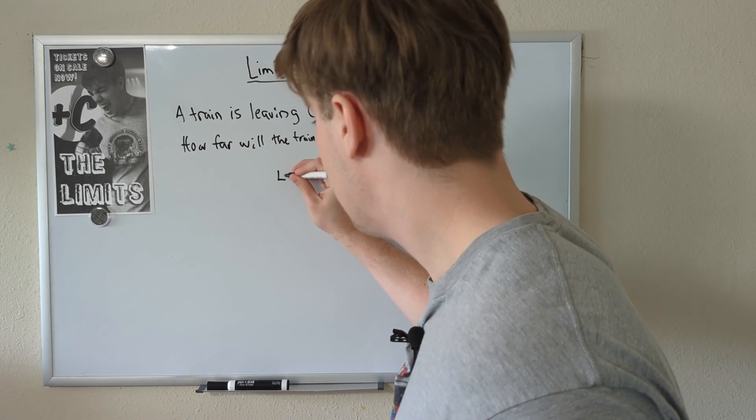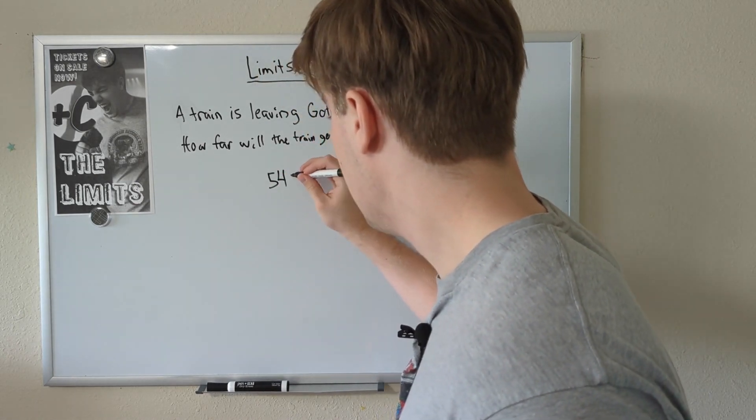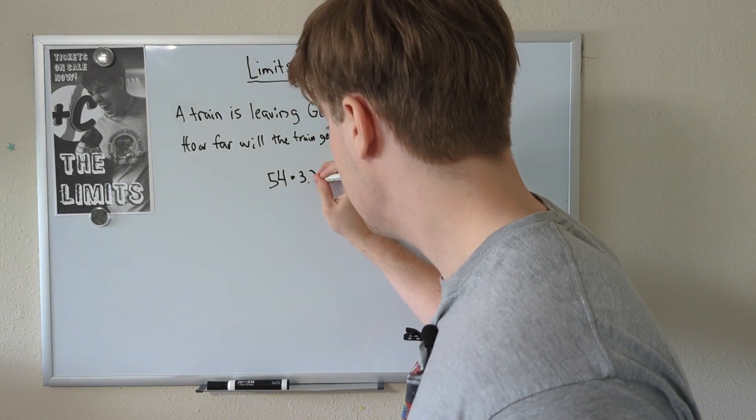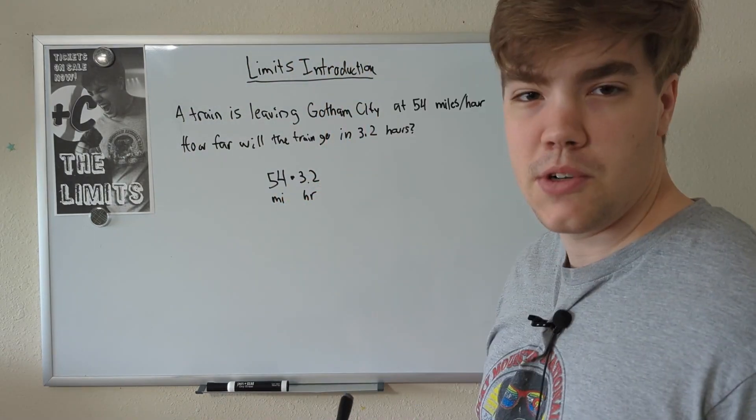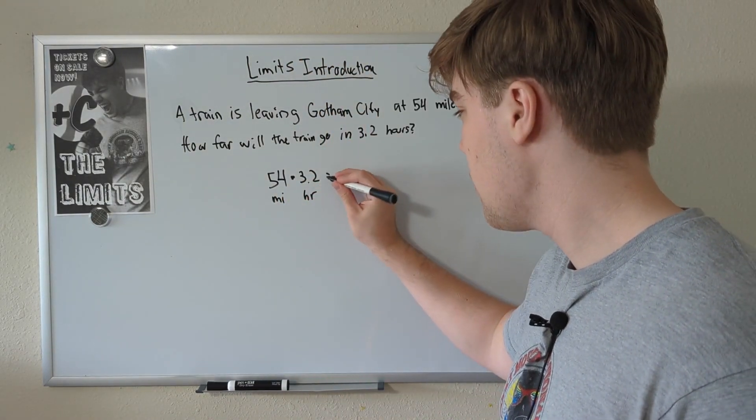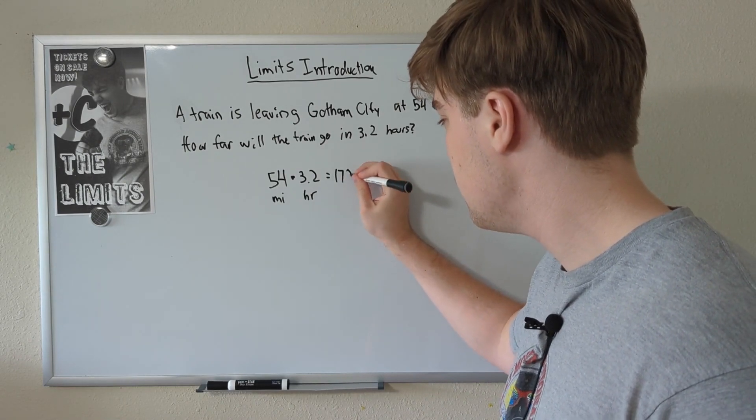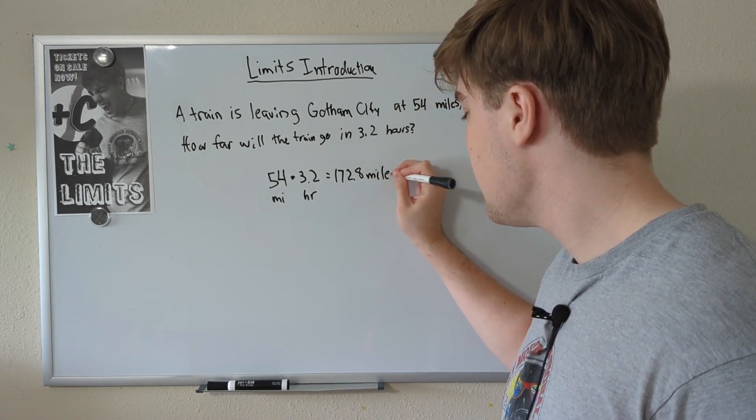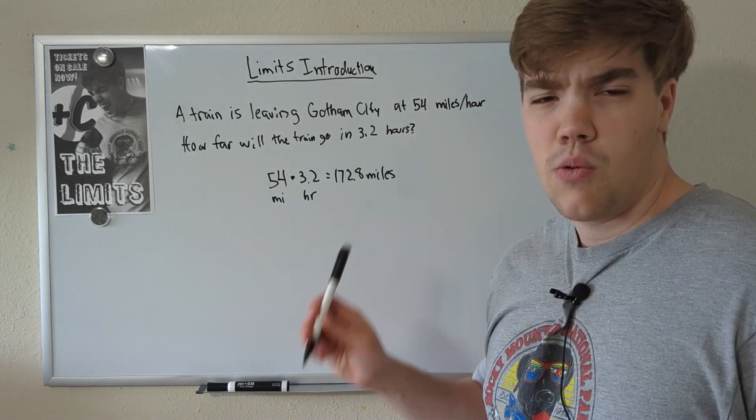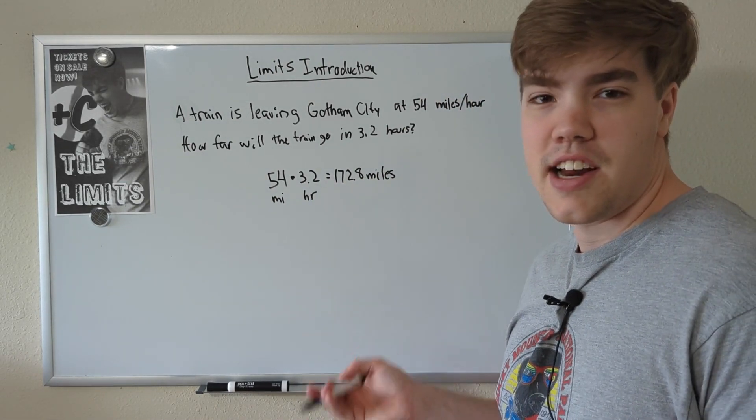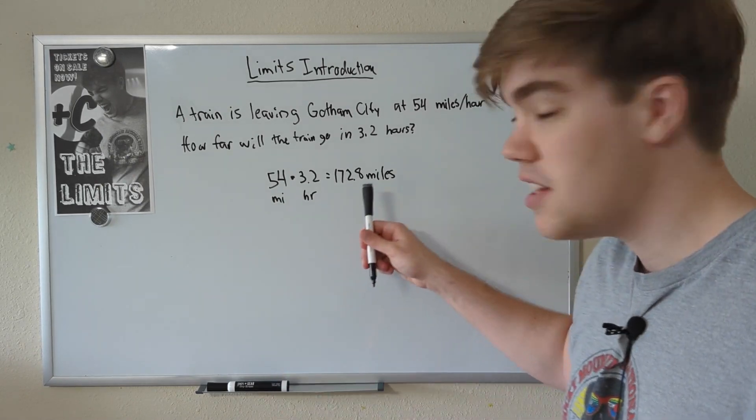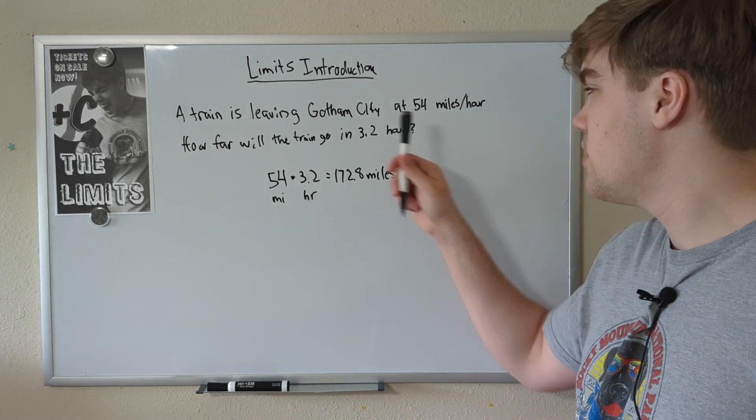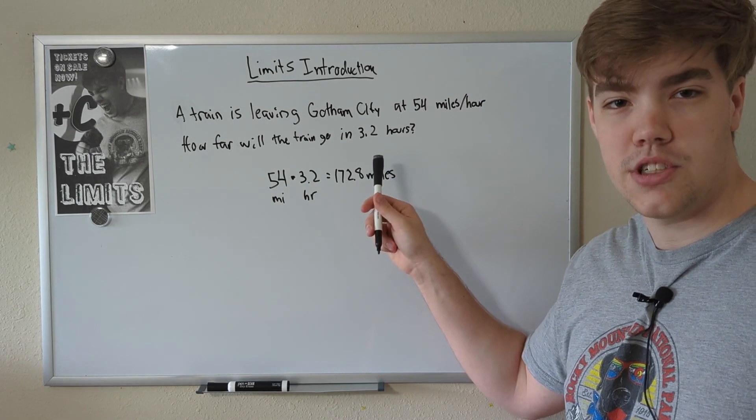All we have to do is multiply 54 times 3.2. 54 miles times 3.2 hours. When we multiply 54 times 3.2, our answer comes out to be 172.8 miles in the allotted 3.2 hours. So why do I bring up this example? This is clearly not a calculus problem. Well, I want to bring up the idea of the limit. This is the farthest the train can go, going 54 miles an hour in 3.2 hours.